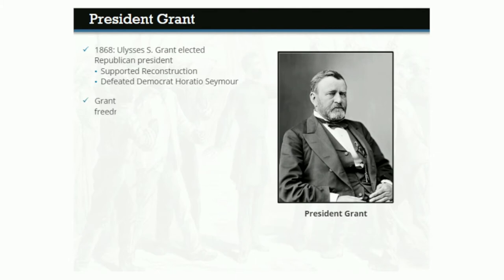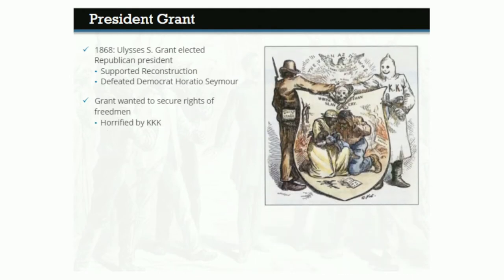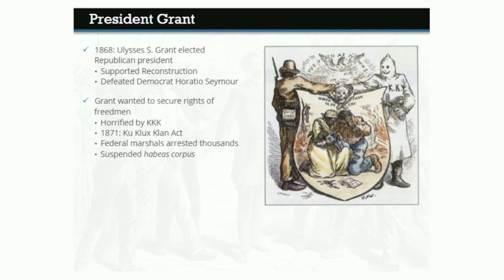As president, Grant sincerely wanted to secure the civil and political rights of freedmen. He was particularly horrified by the atrocities still being committed by the Ku Klux Klan. Federal troops in the South had proved unable to end the Klan's brand of guerrilla terrorism. At Grant's urging, Congress passed the Ku Klux Klan Act of 1871, which allowed the president to send U.S. Marshals into the South and arrest thousands of Klansmen. The act even suspended habeas corpus, meaning the government did not have to prove that suspects were Klan members in order to arrest and detain them.